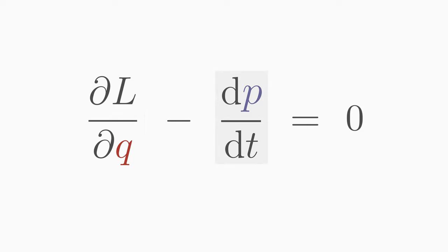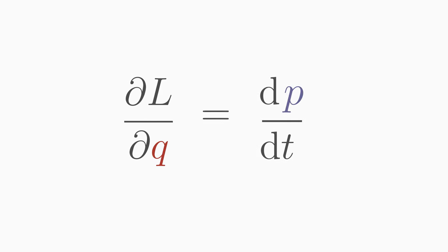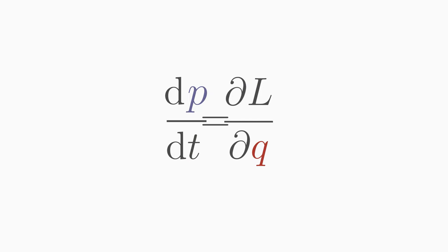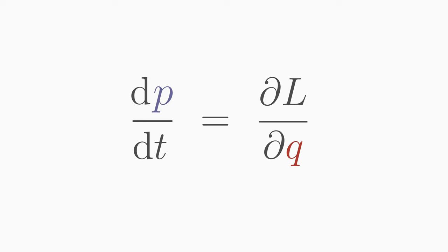The other term is the derivative of the Lagrange function with respect to the generalized coordinate q. If we bring the time derivative of the momentum to the other side, we can read from the Euler-Lagrange equation whether the momentum is conserved. For this, its time derivative must be zero. So we only have to calculate whether the derivative of L with respect to q is equal zero.